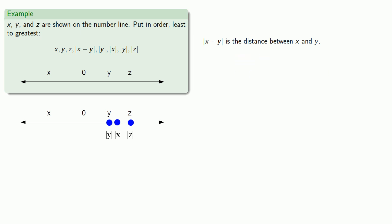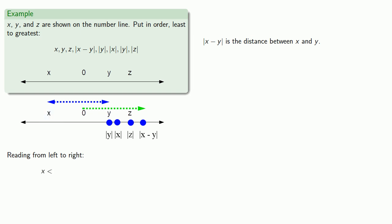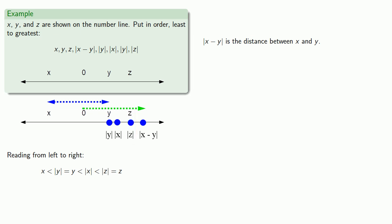The distance between x and y is this amount. Remember, the value of a number when plotted on the number line is the distance from 0, so we want something that's that far from 0. The absolute value of x minus y is going to be right about here. Reading from left to right, the leftmost value is x, which is less than the absolute value of y, which equals y, which is less than the absolute value of x, which is less than the absolute value of z, which equals z. And the rightmost expression — the largest of all — is the absolute value of x minus y.